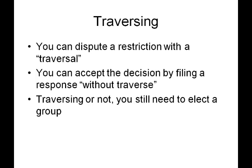You can also traverse the restriction. In a simple restriction, it is common to make an election without traverse. But even if you traverse — which is basically disputing the restriction and asking for reconsideration — you still need to make a selection of a group. In the event that the Patent Office does not agree with you and does not remove the restriction, you need to have a group selected so that they can start the examination process.